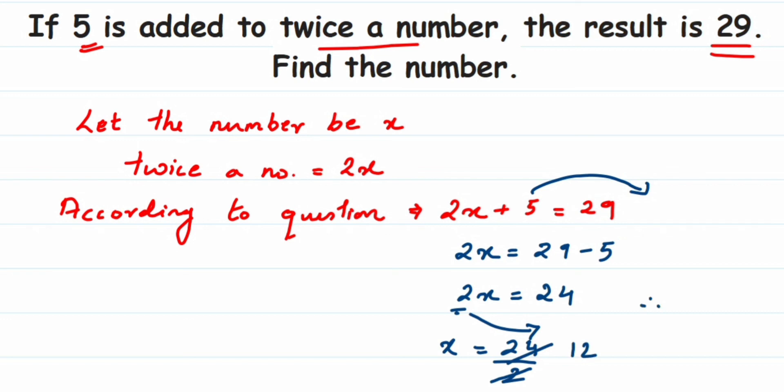This means that the number is nothing but 12. What we have assumed, x was the number which we have to find out, and that is equal to 12.